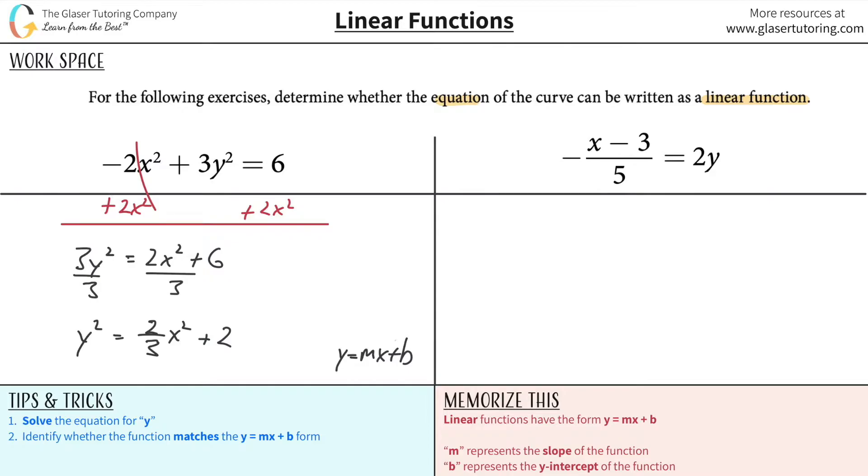Now, I need to get y by itself, right? That means I'd have to take the square root, which is okay. I can do that on the left. I could also do that on the right, but is there any way I can get rid of this x squared? Well, no.